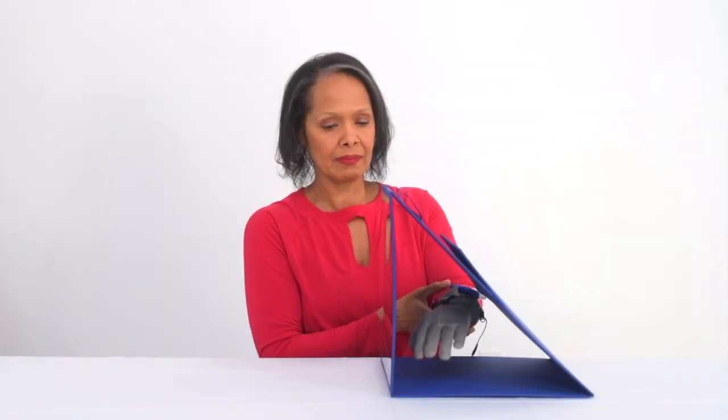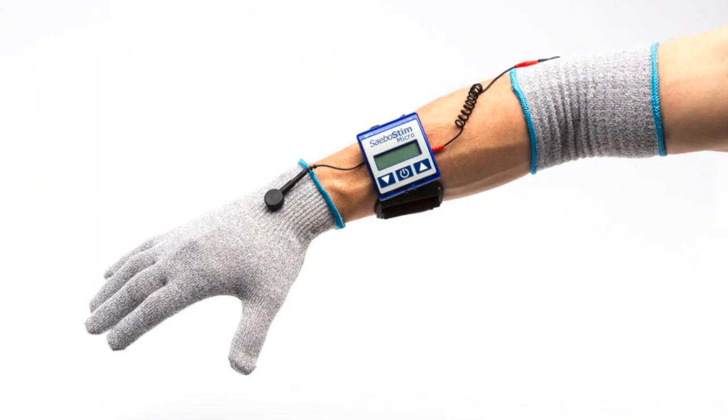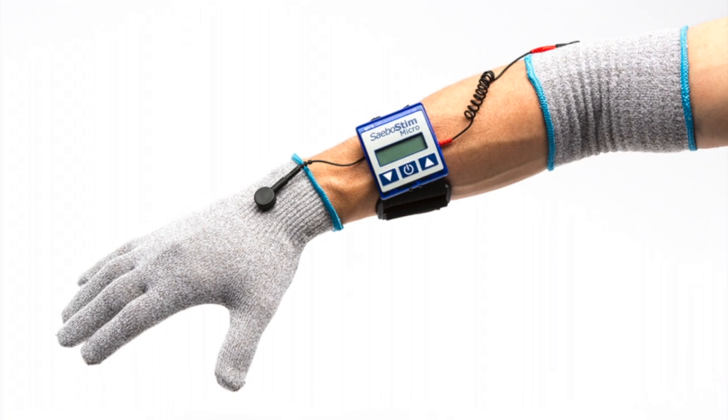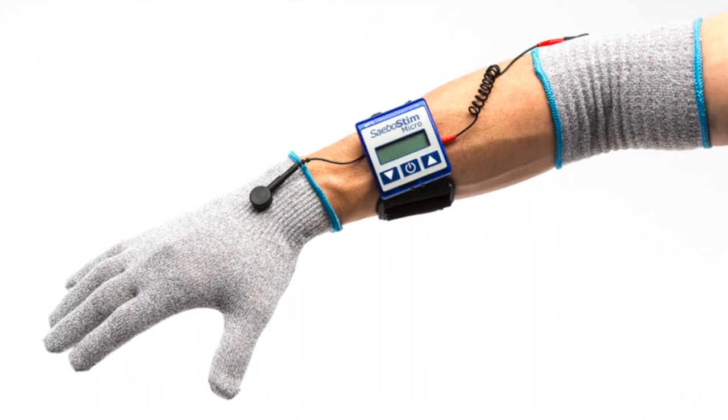To maximize outcomes, sensory electrical stimulation is added using the Sabostim Micro. The Sabostim Micro provides sensory electrical stimulation to the arm and hand using a specialized electro-mesh garment.